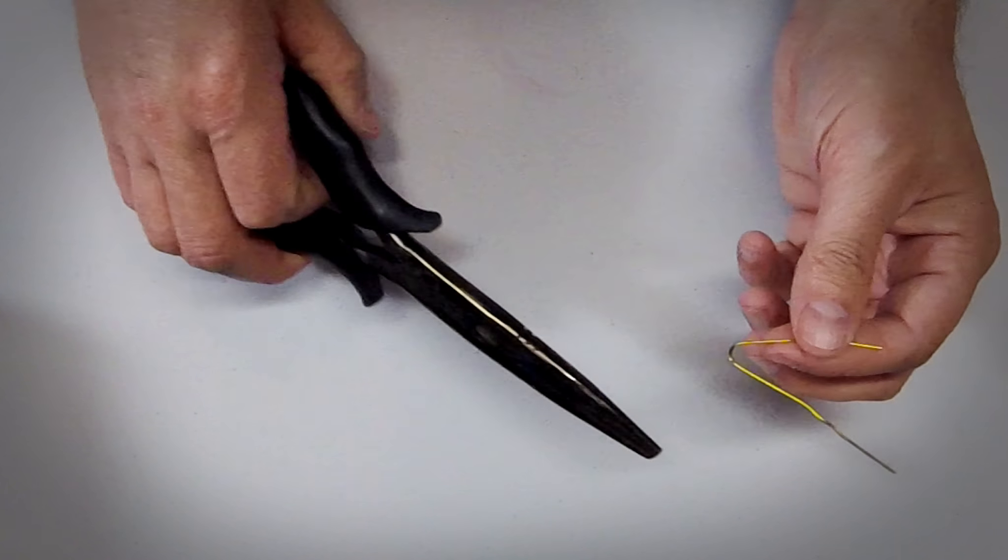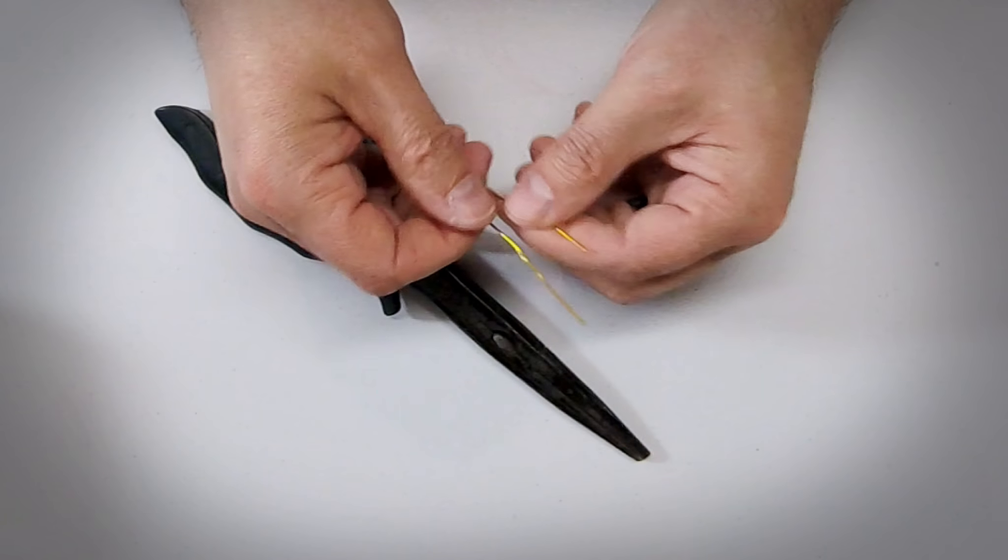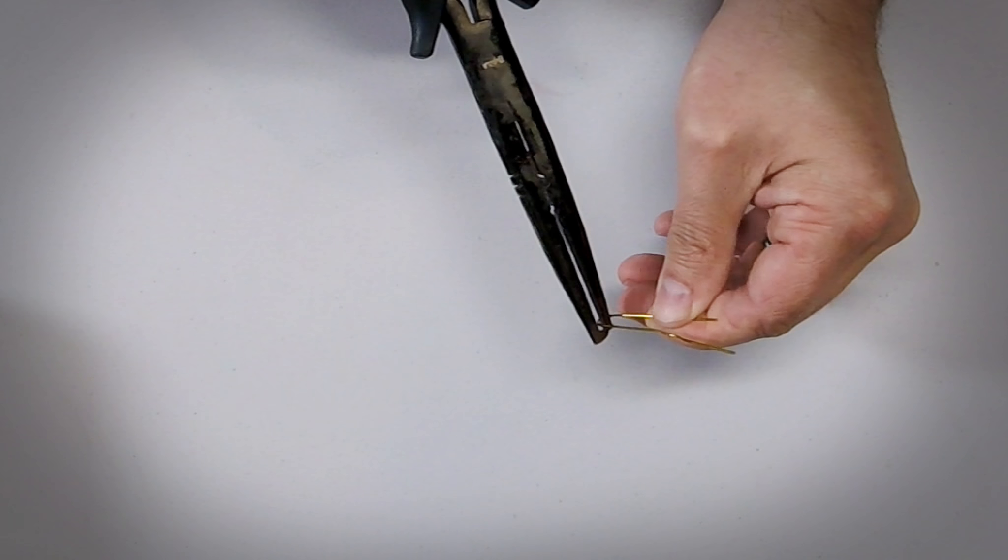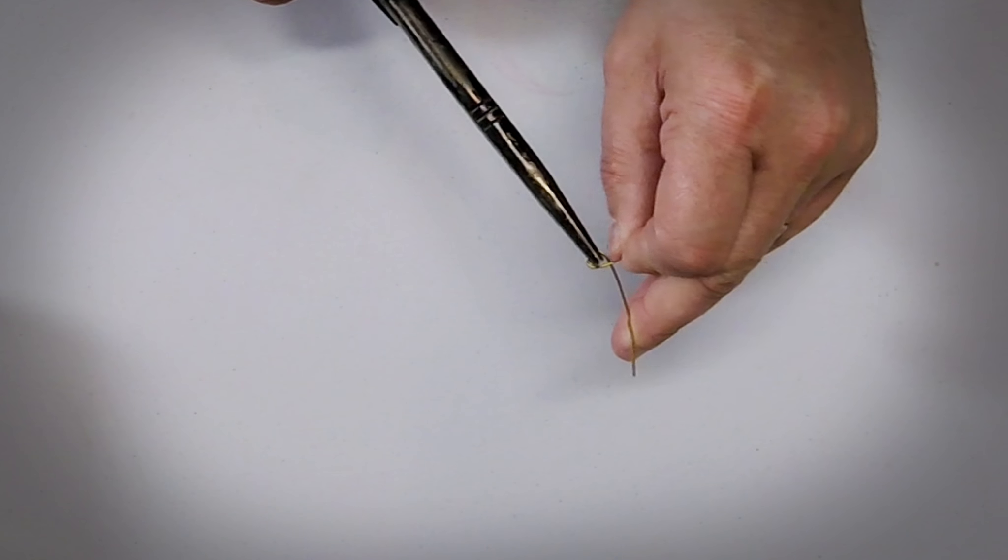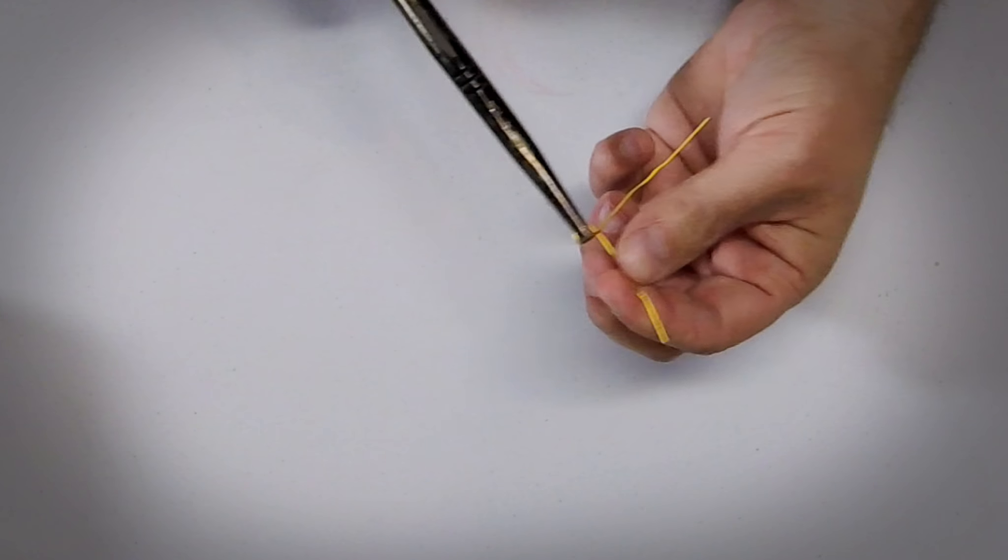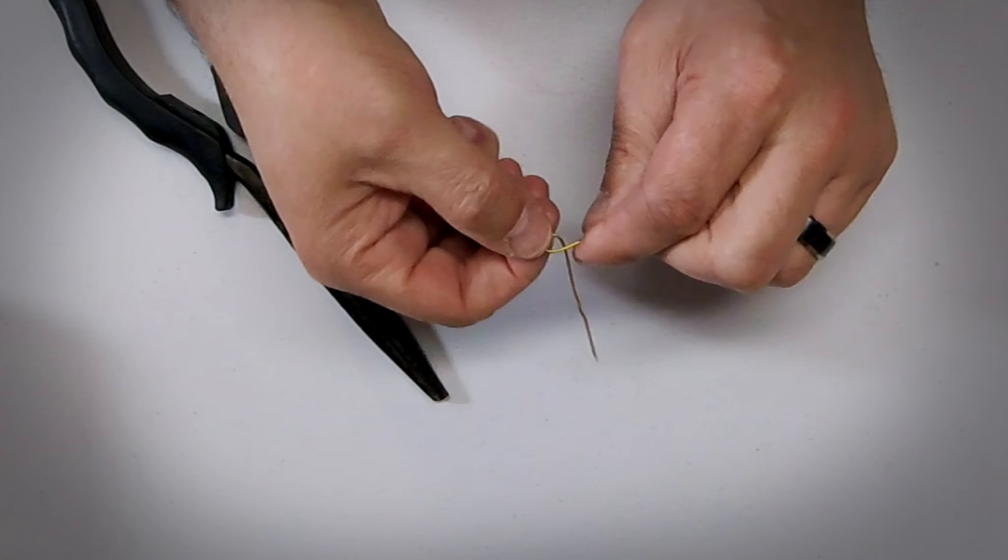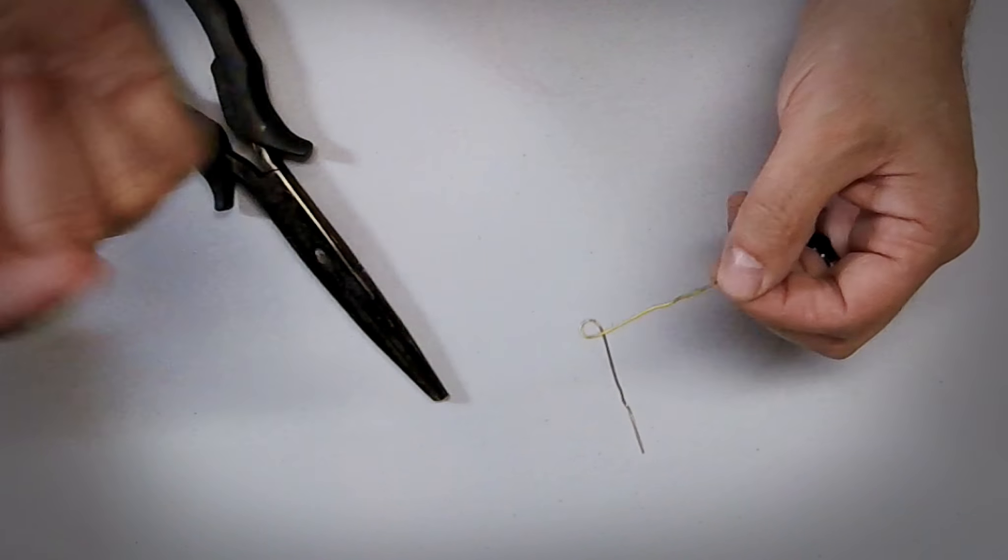Next, you're going to need some needle nose pliers. And what we're going to do is just kind of bend this around. We're just going to bend this like this. Get ourselves started.